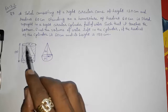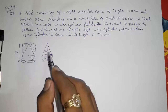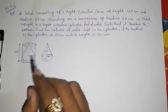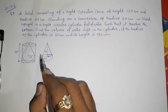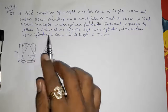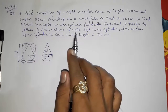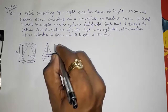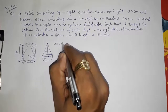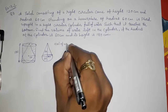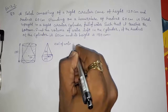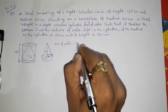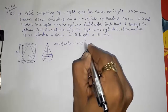What we have to do is find the volume of the cylinder, then subtract the volume of the cone and the volume of the hemisphere — then we will get the volume of the water left in the cylinder. So: volume of water left = volume of cylinder